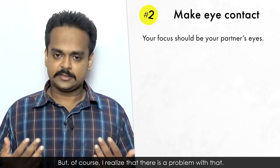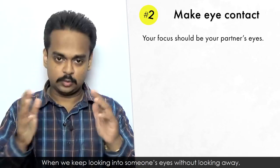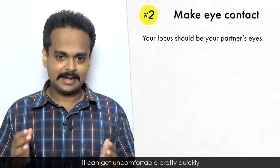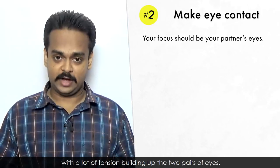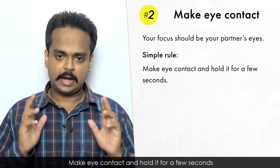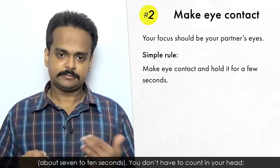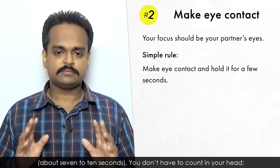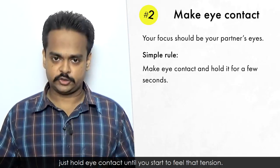But of course, I realize that there is a problem with that. When we keep looking into someone's eyes without looking away, it can get uncomfortable pretty quickly, with a lot of tension building up between the two pairs of eyes. So here's a simple rule for you to follow. Make eye contact and hold it for a few seconds – about 7 to 10 seconds. You don't have to count in your head.